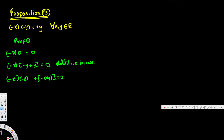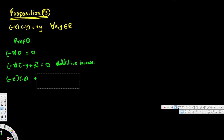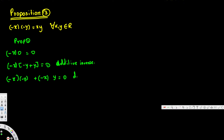By distributive law we just multiply through, so this is going to be negative x times negative y, plus negative x times y, and that is equal to zero. This step is by distributive law.